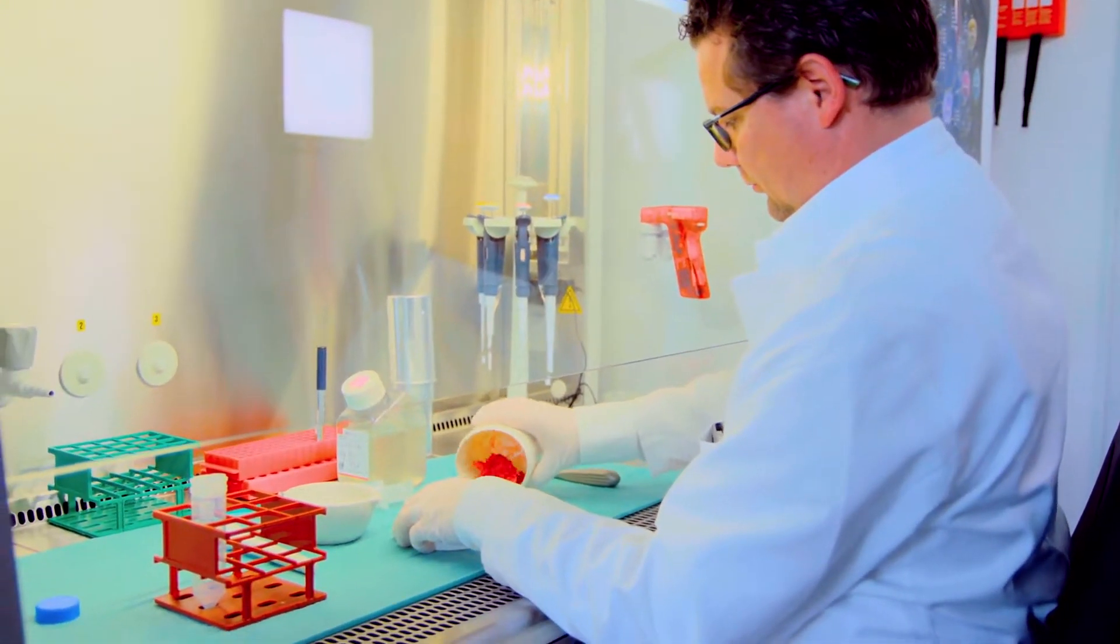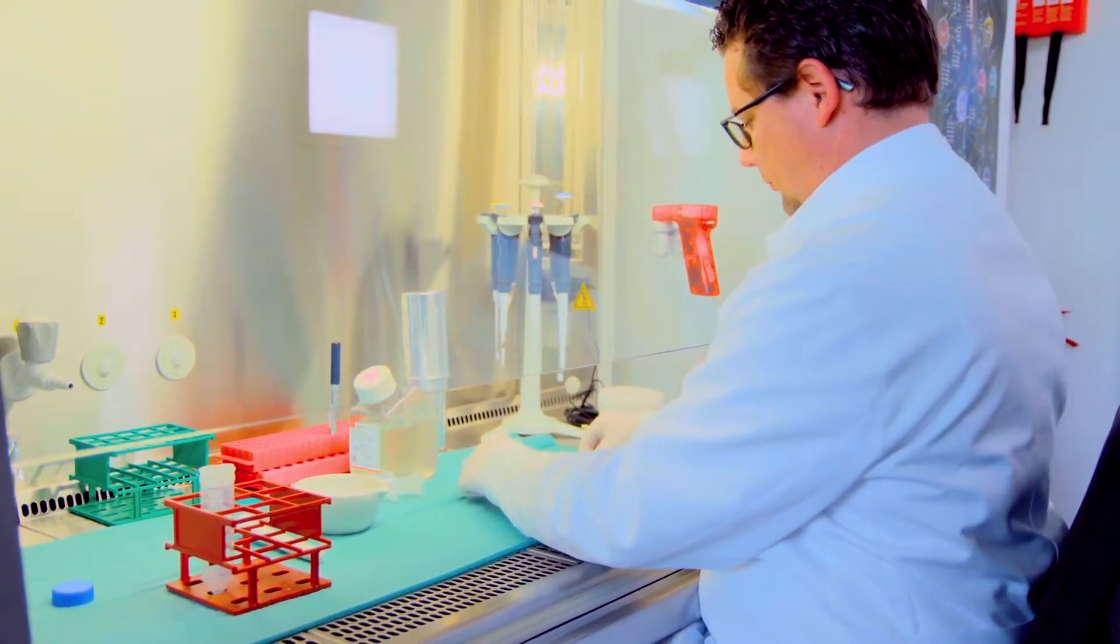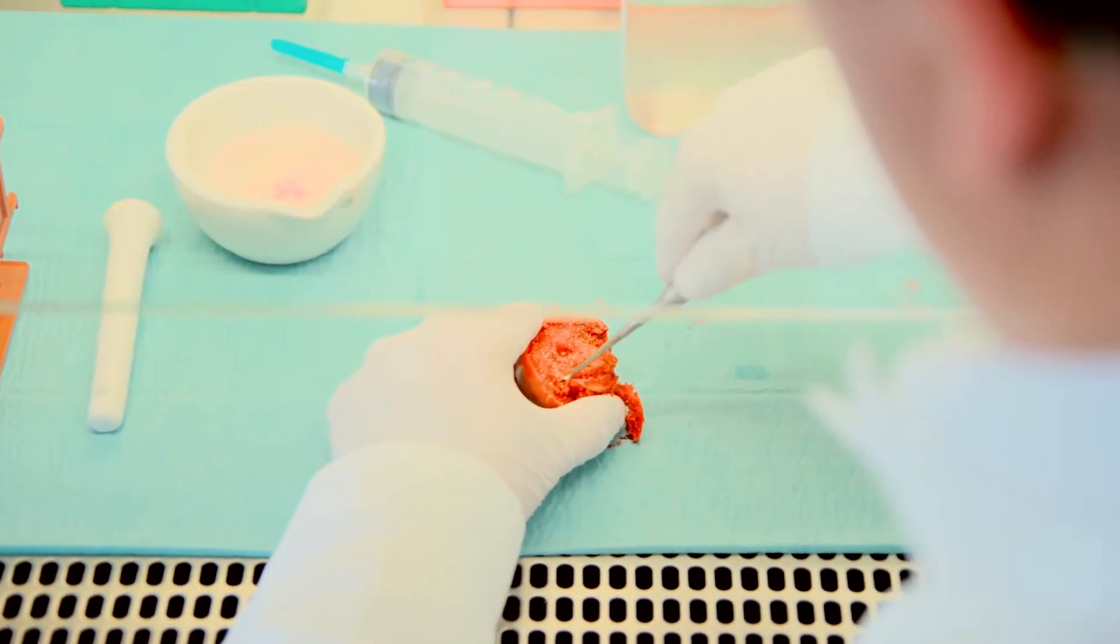One source of stem cells are fractured hip bones, which are usually discarded in clinical routine. Instead, they can be used to obtain aged stem cells from the bone marrow.